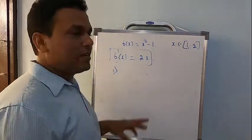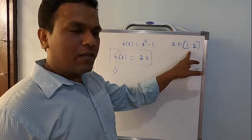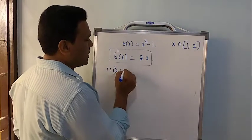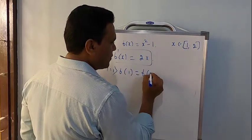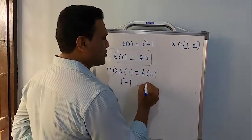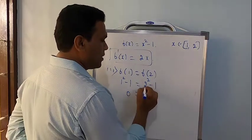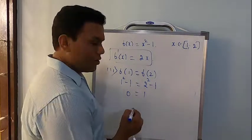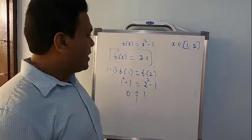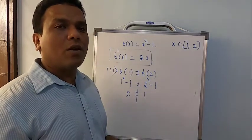So what is the first condition? It is a polynomial, hence it is continuous in the closed interval [1, 2]. Once it is continuous, it is differentiable in the open interval (1, 2). Now the third condition: I have to check whether f(1) equals f(2). f(1) = 1² − 1 = 0, and f(2) = 2² − 1 = 3. Is 0 equal to 1? Certainly not — it fails. f(a) is not equal to f(b), hence Rolle's theorem is not satisfied.